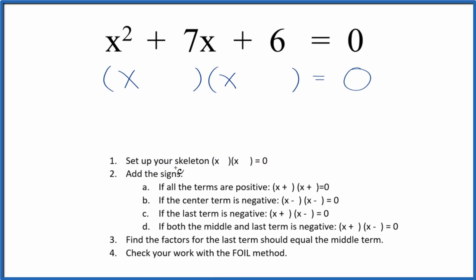And the first thing we need to do, we want to set up a skeleton equation. I've already set that up right here. Once we've done that, we can add the signs to the skeleton. So I have positive and positive here. If both terms are positive, we're going to have positive and positive in our skeleton equation.